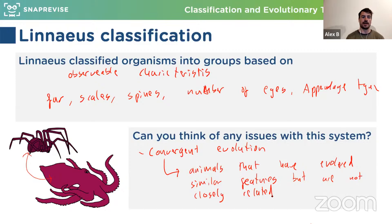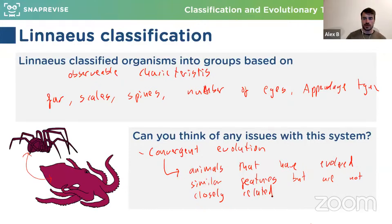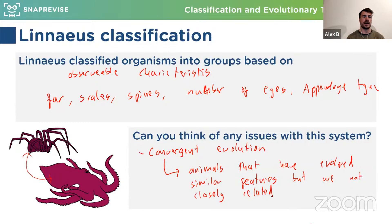Grouping things purely on arbitrary observable characteristics doesn't tell us anything about evolutionary history and isn't very useful. So in more recent times we've moved to phylogenetic taxonomy — grouping things based on their evolutionary history, so the closer things are related, the smaller the group we put them in.